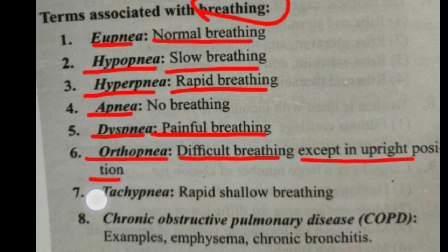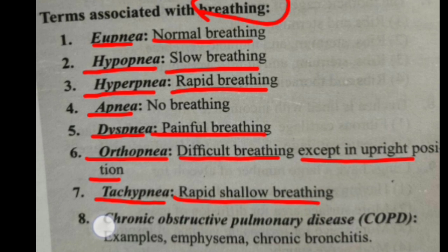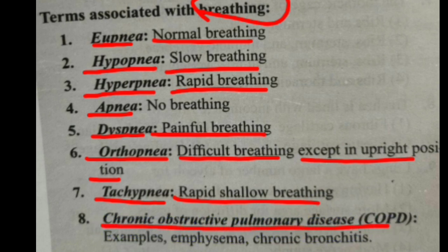Number 7: Tachypnea is rapid shallow breathing. Number 8: Chronic Obstructive Pulmonary Diseases — examples include Emphysema and Chronic Bronchitis.